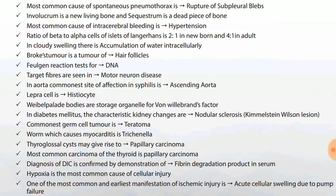Ratio of beta to alpha cells of islets of Langerhans is 2:1 in newborn and 4:1 in adults — note it is beta to alpha, not alpha to beta, so beta is always greater than alpha. In cloudy swelling there is an accumulation of water intracellularly.